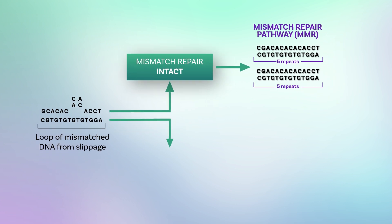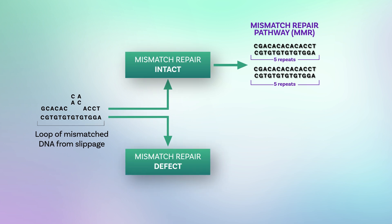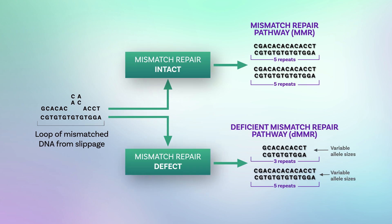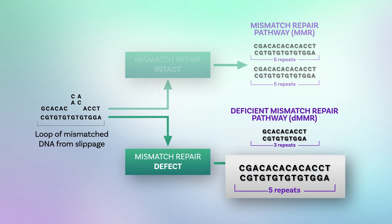However, in some cancers, the mismatch repair pathway is deficient and does not correct errors appropriately. These cancer cells have deficient mismatch repair, or simply dMMR.